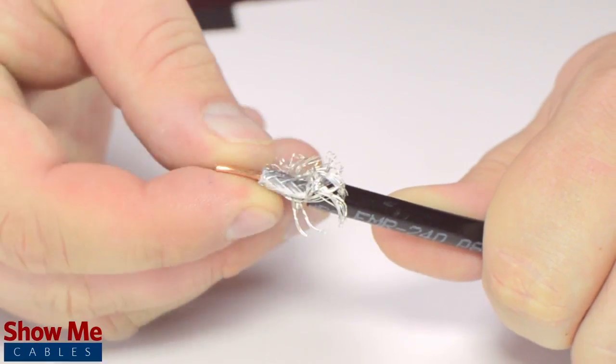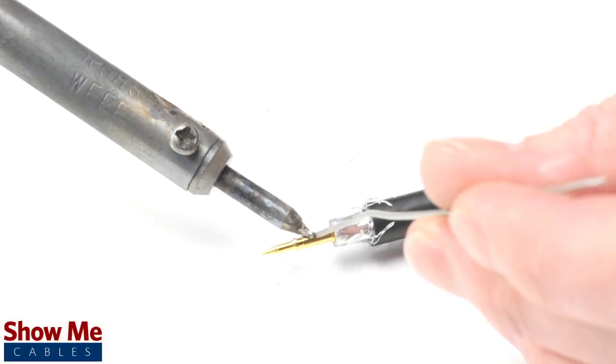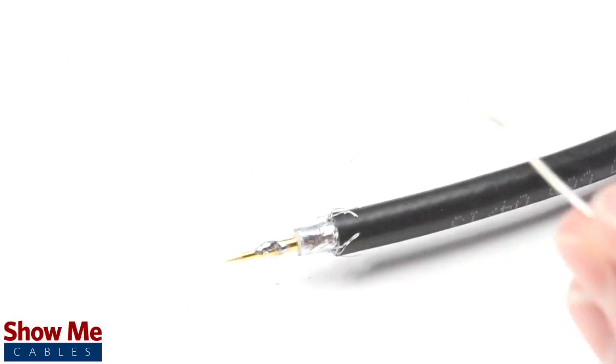Pull back the braided shield and insert the pin onto the center conductor. Solder the pin onto the center conductor and insert the connector housing over the cable.